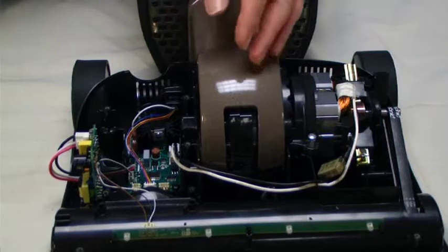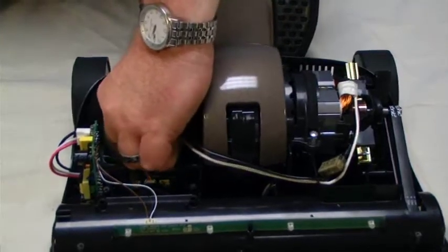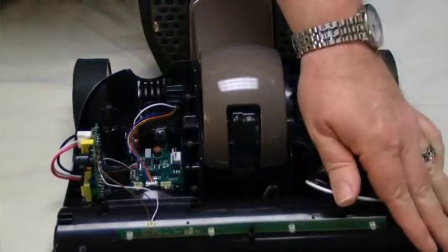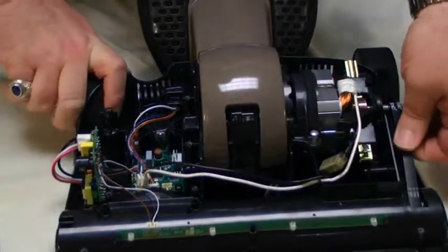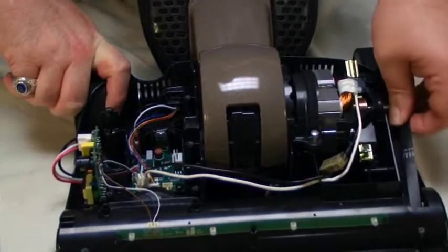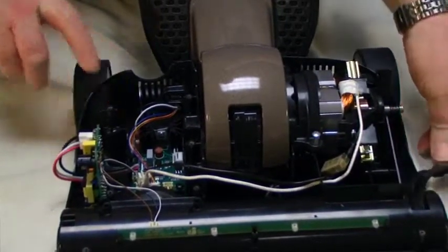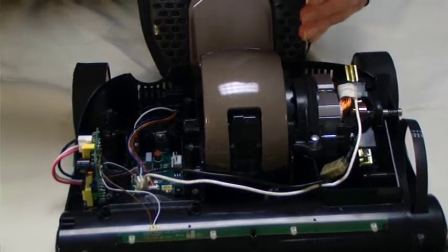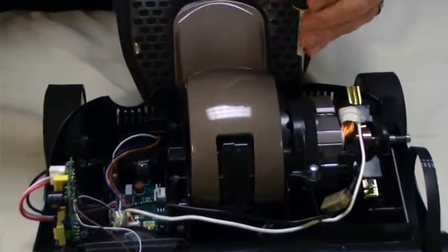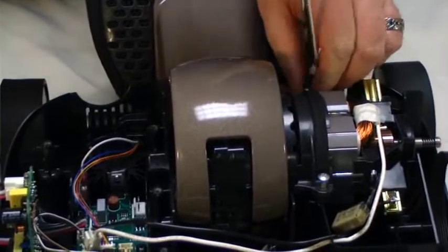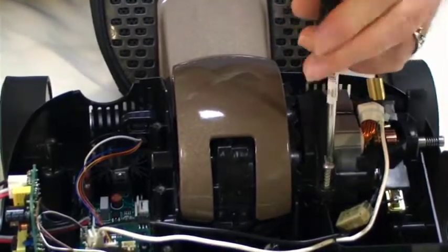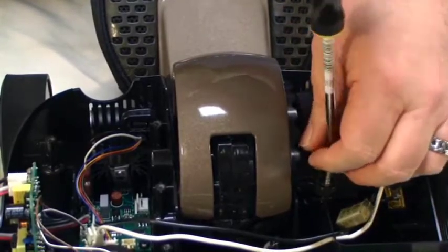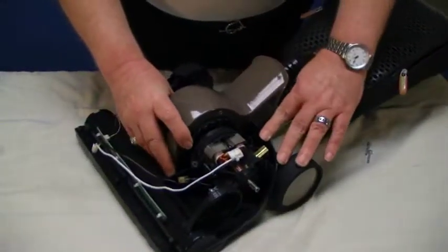First of all, we're going to remove the motor power connection from the control board. Then we're going to roll the belt off the drive shaft and remove the two motor screws. Set those to the side, and then of course, lift out the motor module.